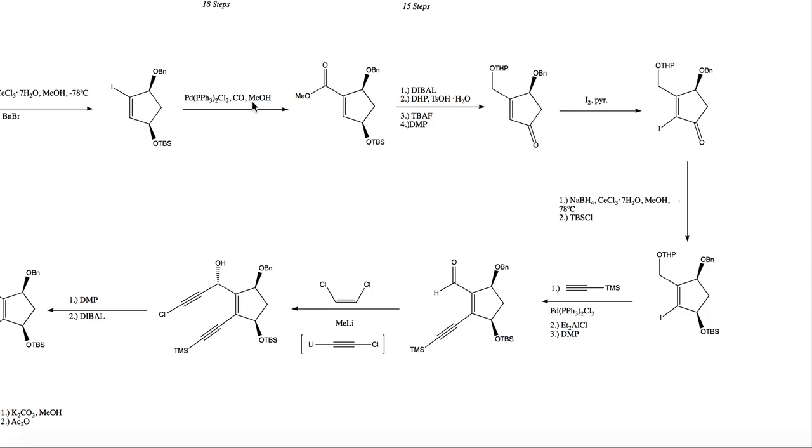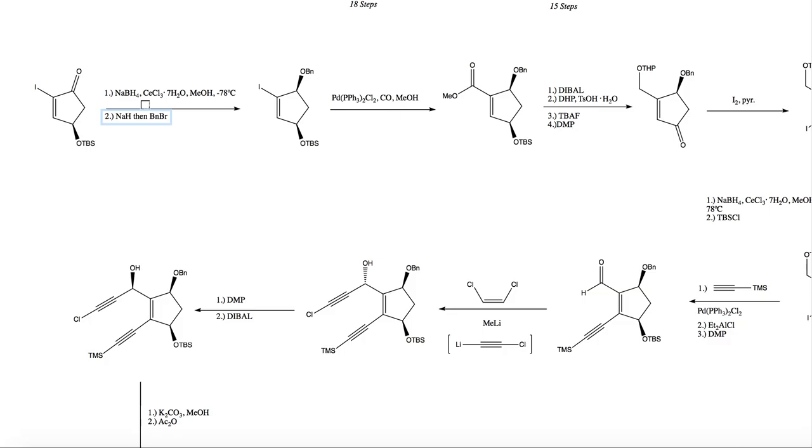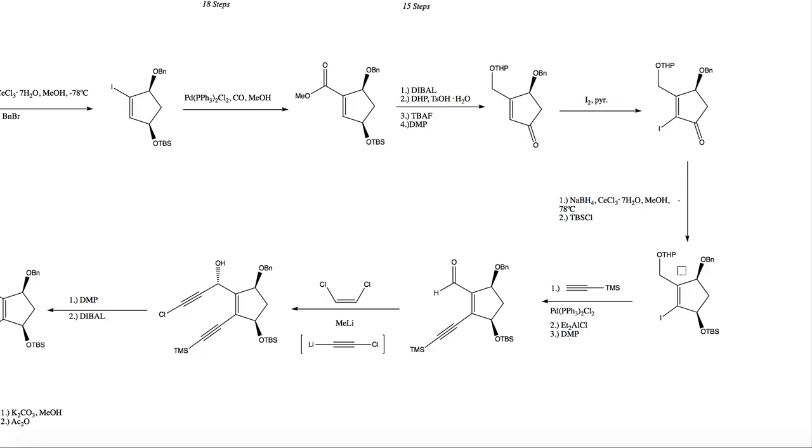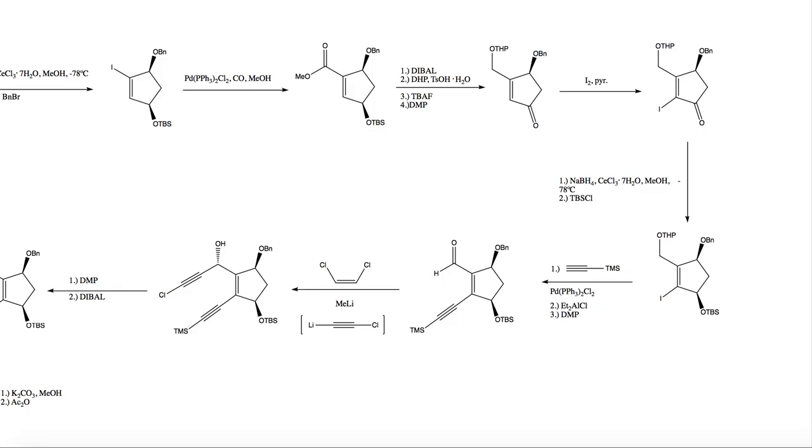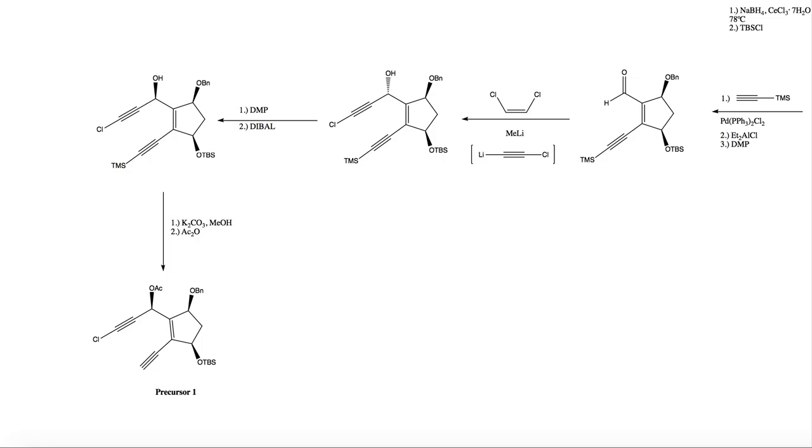And this important thing to highlight with this synthesis also is the clever use of functional group interchange. So they leave this benzyl group on the entire synthetic pathway from the very second step after they install it, and then they interchange protecting groups between this oxygen atom and this oxygen atom throughout the synthesis to give the desired transformations. So this is important protecting group chemistry.